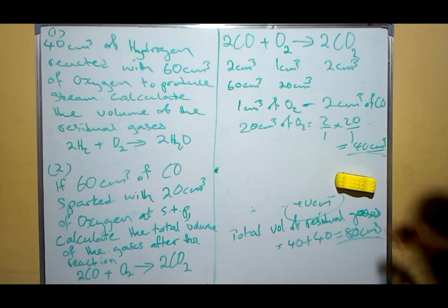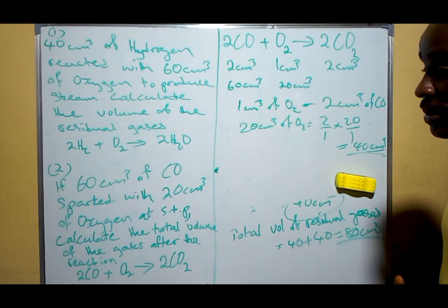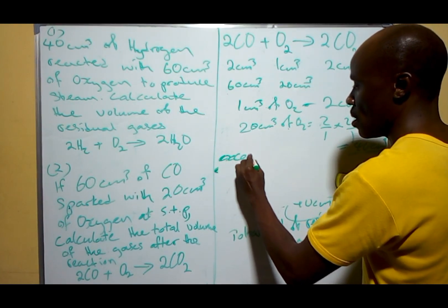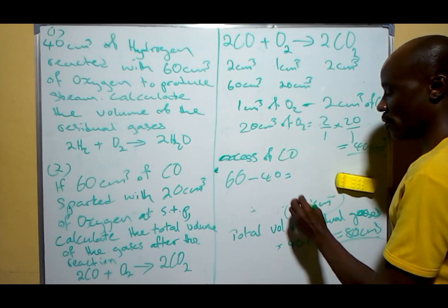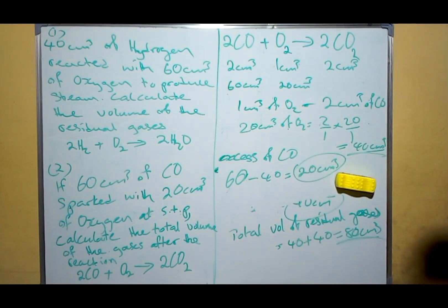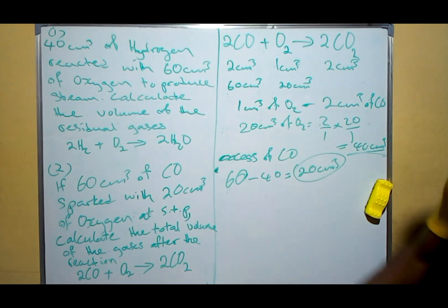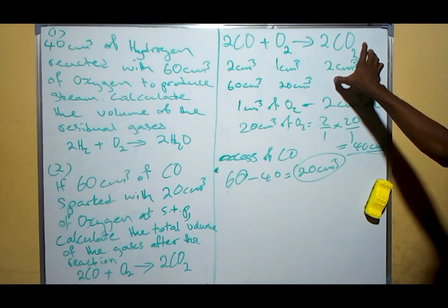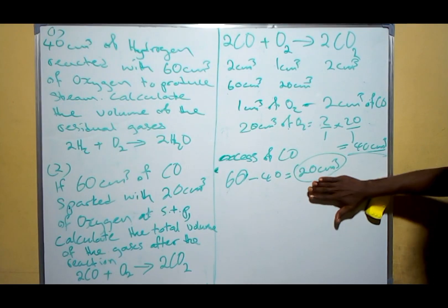Now, this 40 cm³ of CO is not one of the remaining gases because it will go into reaction with the oxygen — all of it will disappear. One of the gases we expect after the reaction is the excess CO. Excess CO = 60 − 40 = 20 cm³. This 20 cm³ is one of the gases we need after the reaction.